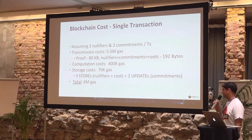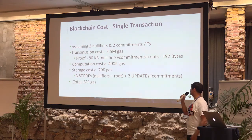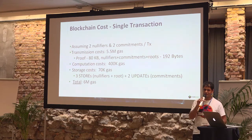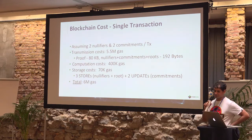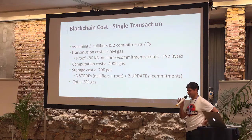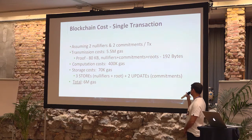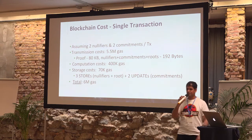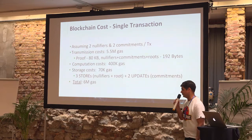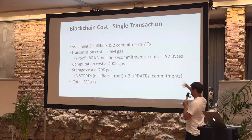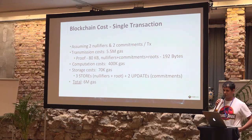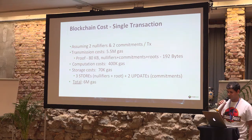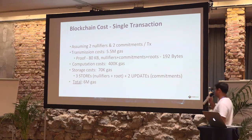To sum up and tell a little bit about the costs. Let's assume that in one single shielded transaction there are on average two nullifiers and two commitments. Transmission costs for STARK: the nullifiers, commitments, and roots of the Merkle tree are together 192 bytes. The STARK proof currently for one shielded transaction will be 80 kilobytes. The total transmission cost will be 1.5 million gas — pretty high.